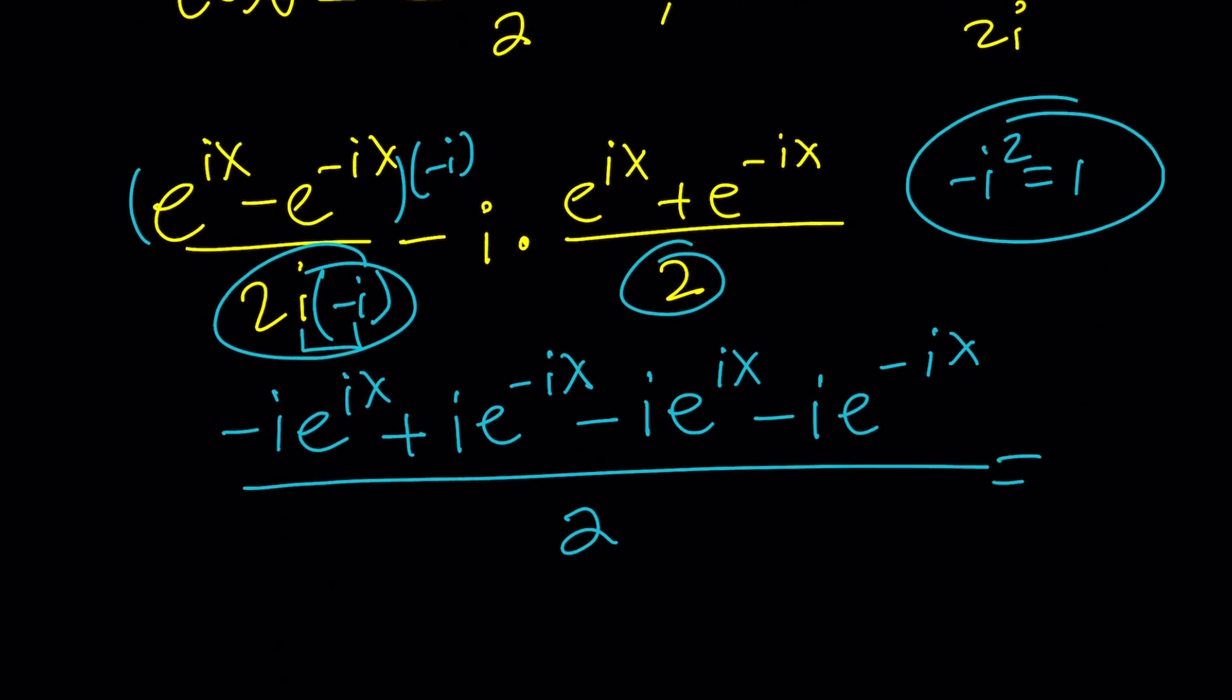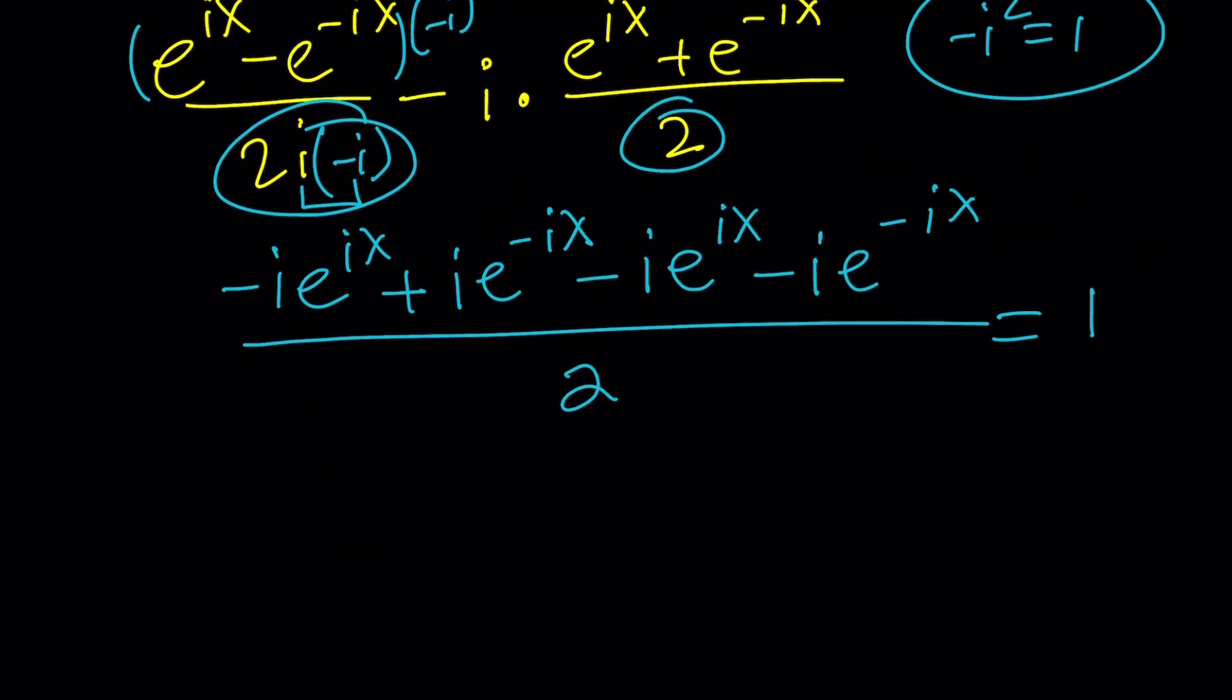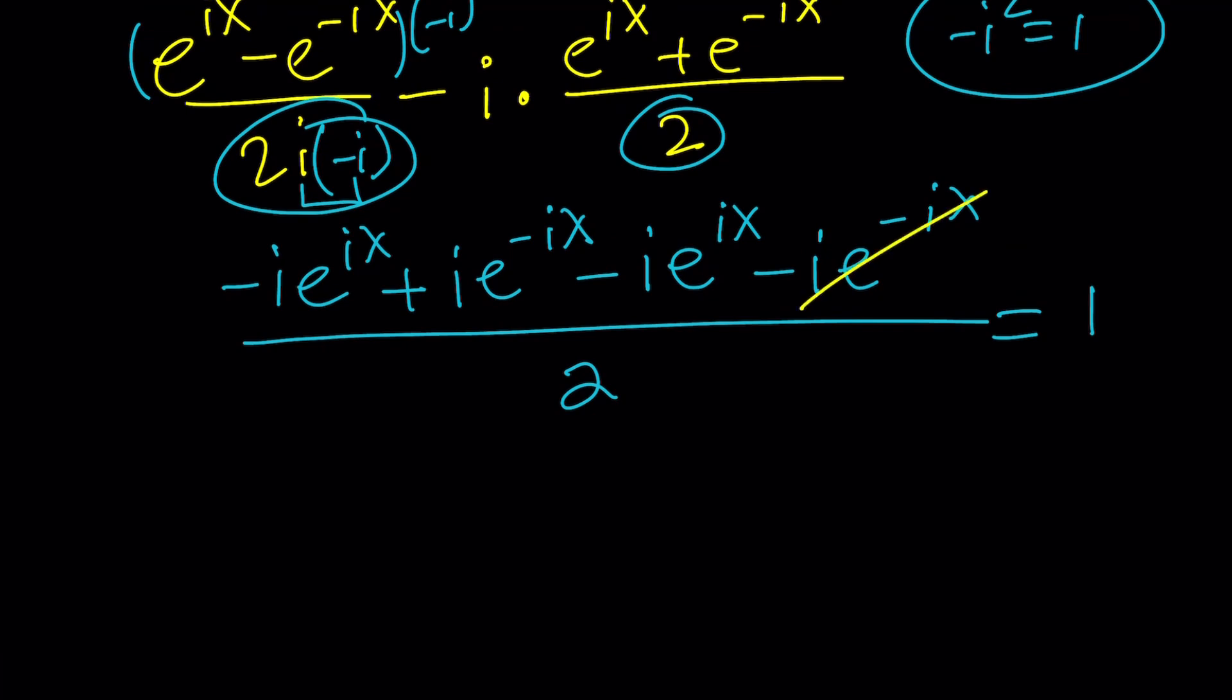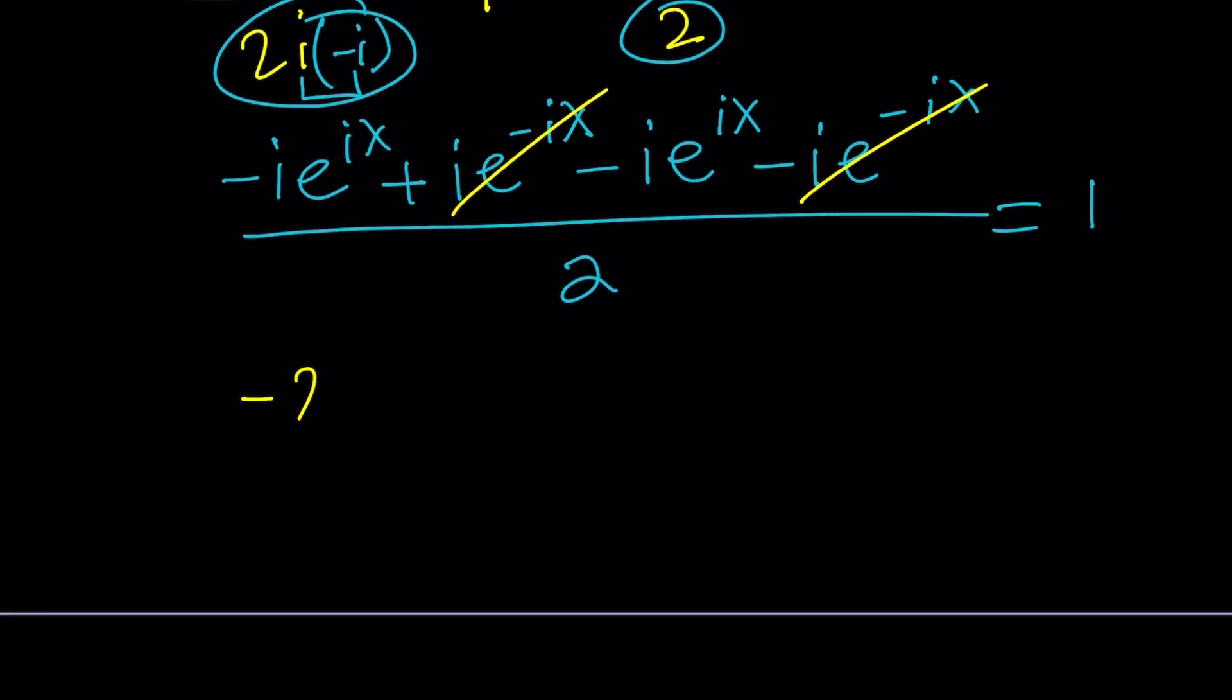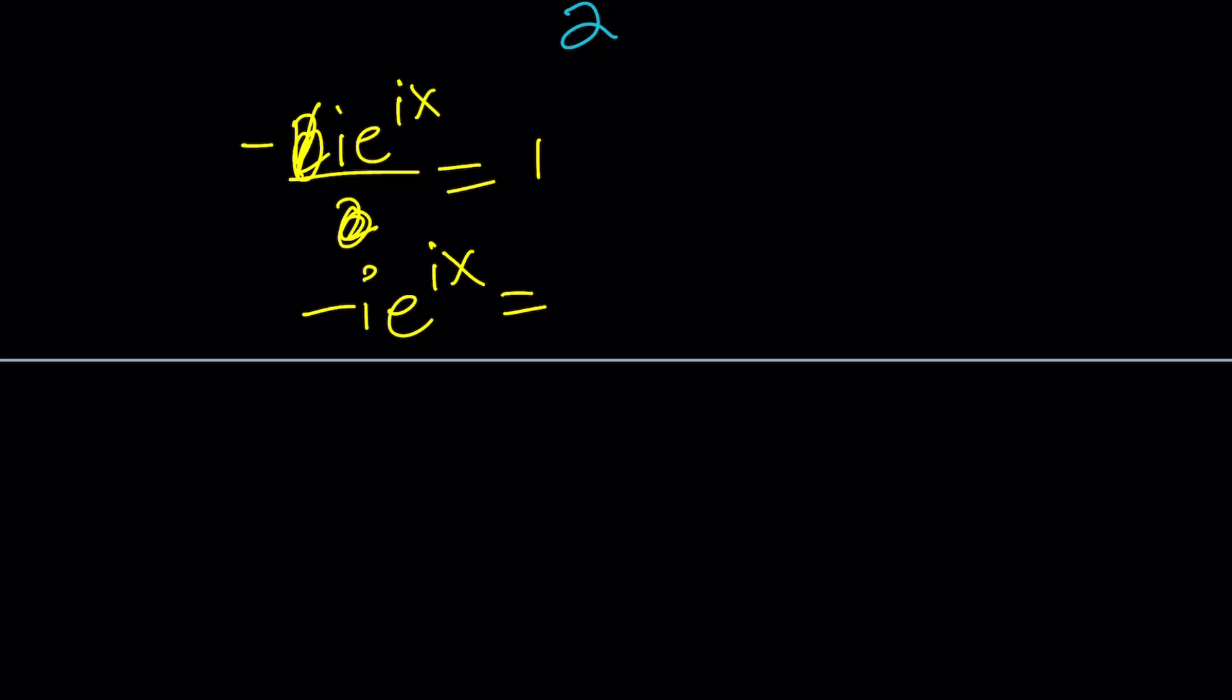Since we have a common denominator now, let's subtract the second numerator: minus i e to the i x minus i e to the negative i x, all divided by 2, and we set that equal to 1. Let's simplify this. Some terms will cancel out. We're going to have negative 2 i e to the i x divided by 2 equals 1. We can cross out the 2s. Next I'm going to multiply both sides by i, and negative i squared is going to disappear. We're going to get e to the i x equals i.